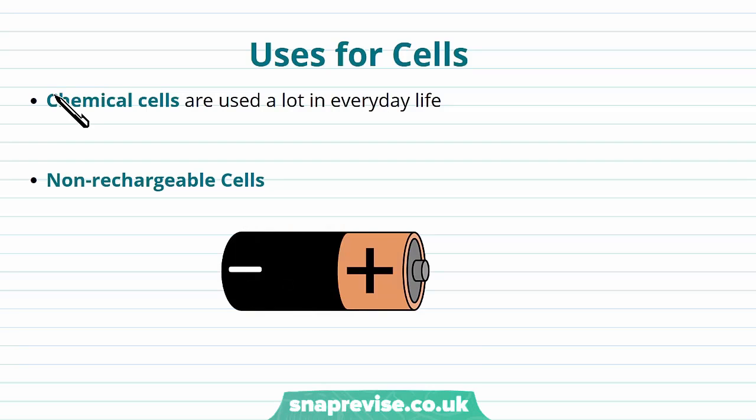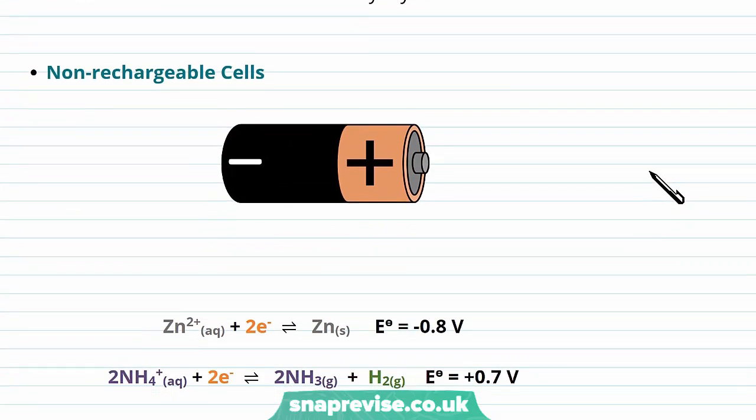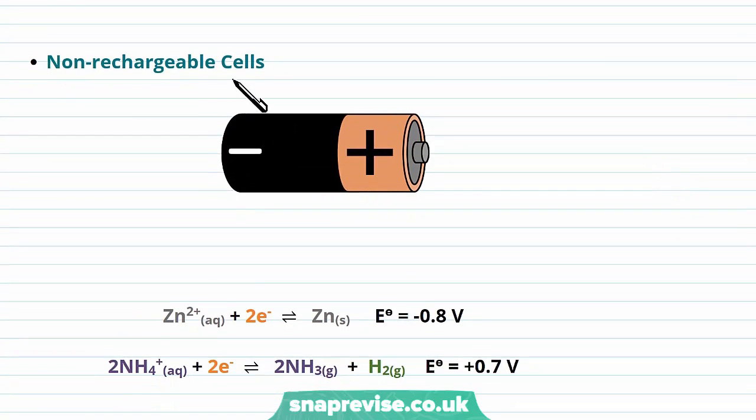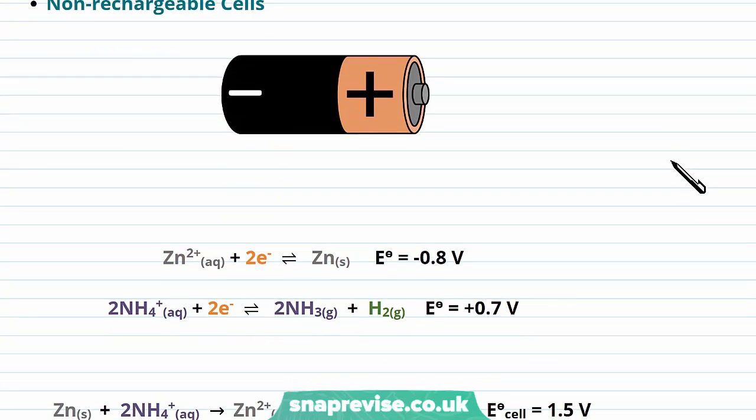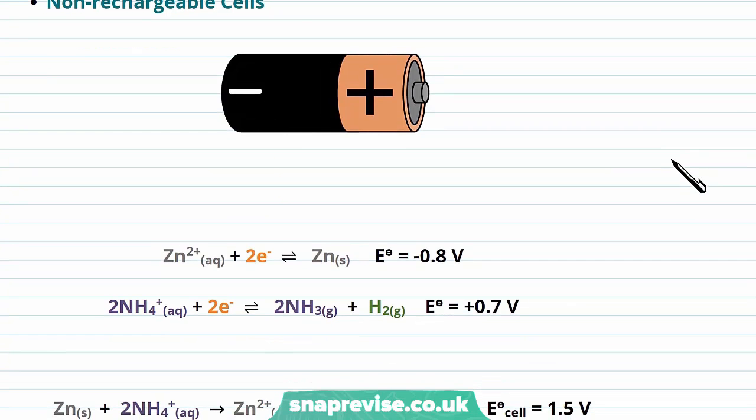In other videos we've talked about the chemistry of chemical cells, how they work and how they involve redox reactions. They're used a lot in everyday life. The first example are non-rechargeable cells. You'll probably have called these batteries your whole life and they power everything from remotes to games consoles and even things like doorbells.